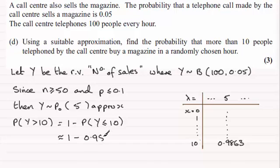So 0.9863, and then this is going to be 0.0137, and that gives us our approximate value for the probability then of Y being greater than 10.